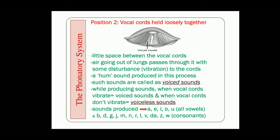Because of that reason, the air which passes through it makes some sound, creates some disturbance, creates some vibrations to the vocal cords, and due to this a hum-like sound is produced. These sounds are called voiced sounds. However, when the vocal cords do not vibrate while producing sounds — without any disturbance, or without much disturbance — when the air passes through the vocal cords in this second position, such sounds are called voiceless sounds. So in the second position we can see different sounds — all the vowels are there, and some of the consonants are also there, as you can see on the screen.